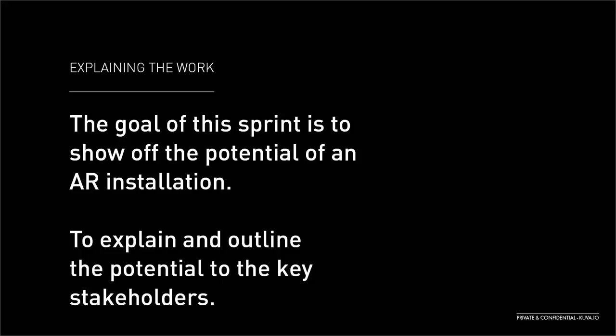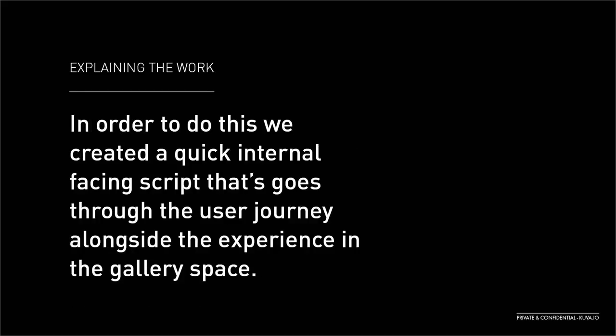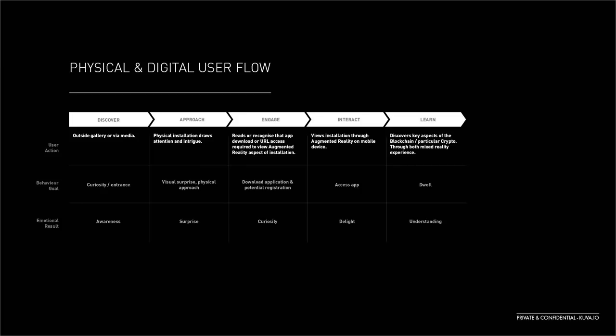Getting back to the installation — the goal within this sprint is to show off the potential of the augmented reality installation and explain its potential to the key stakeholder team. We created a quick internal-facing script that goes through the user journey alongside the experience inside the gallery space. We have a user flow with three components: user action, the behavioral goal, and the emotional result — and five key stages within that process: discover, approach, engage, interact and learn.